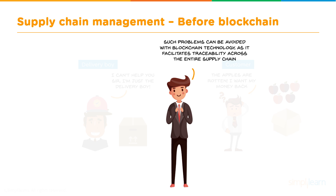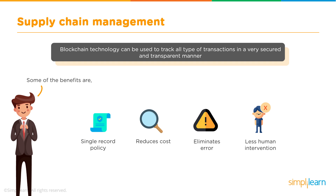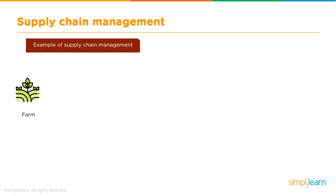With blockchain technology, there is traceability across the supply chain. You can trace back what happened to the product at each step. Blockchain enables these transactions to be tracked in a secure and transparent manner. Some benefits include: a single record policy throughout the entire supply chain, reduced costs since there's no requirement for multiple records, and elimination of errors with less human intervention — the less human intervention, typically the lesser the amount of error.